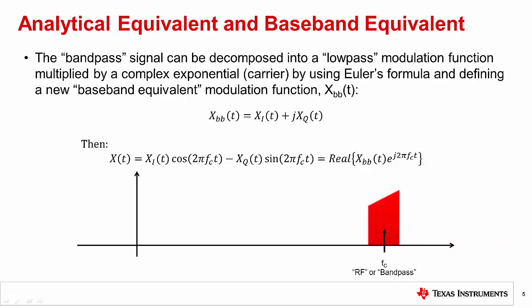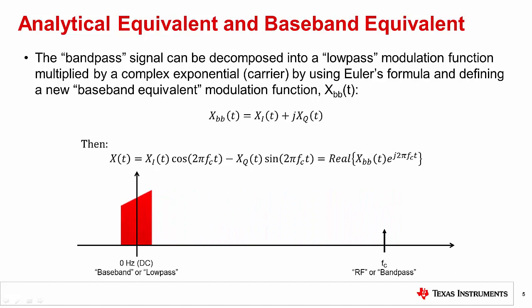The bandpass signal can be decomposed into a low-pass modulation function multiplied by a complex exponential carrier. The term low-pass refers to the signal being centered at DC, also called baseband. This new baseband modulation function, x_bb(t), is formed from the I and Q real-value modulation functions, where Q represents the complex component. It is easy to see that x_bb(t) is a real-valued function if x_q(t) equals 0. When x_bb(t) is real-valued, the result is real modulation. Or if x_q(t) is not 0, it is a complex signal which results in complex modulation.